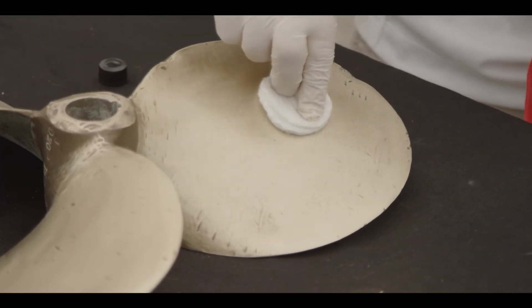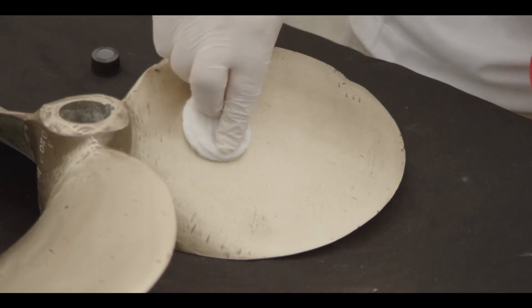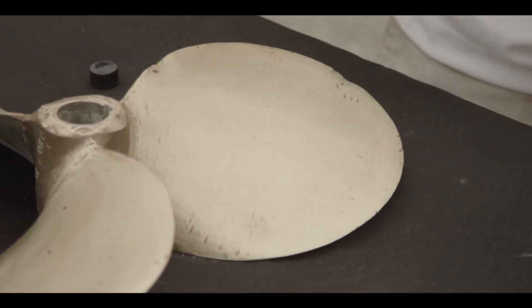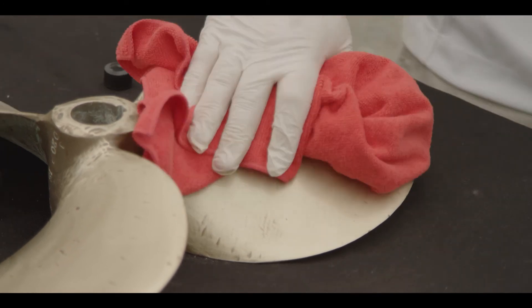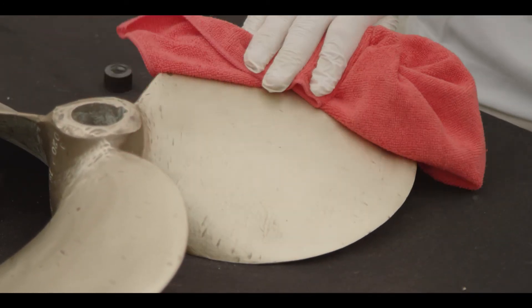After the prop has been set for two to three minutes, repeat the GlideCoat PropOptimizer application process again, going from blade to blade. A minimum of three coats is required to receive optimal results.